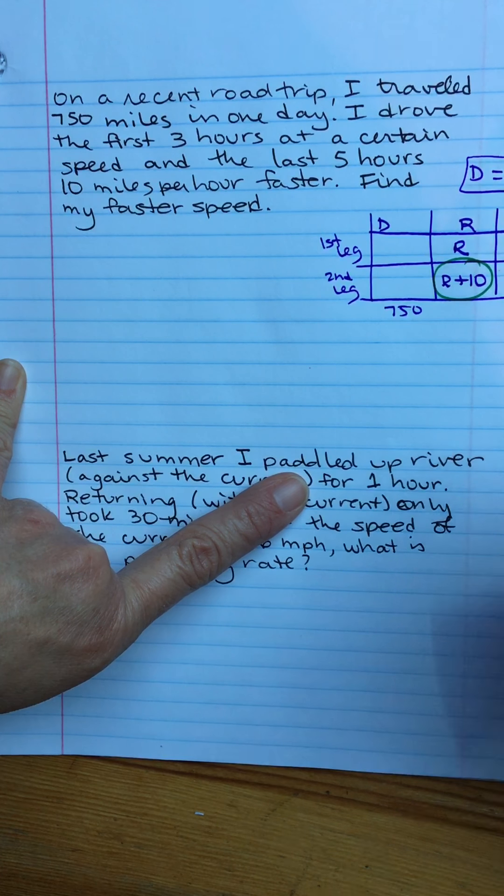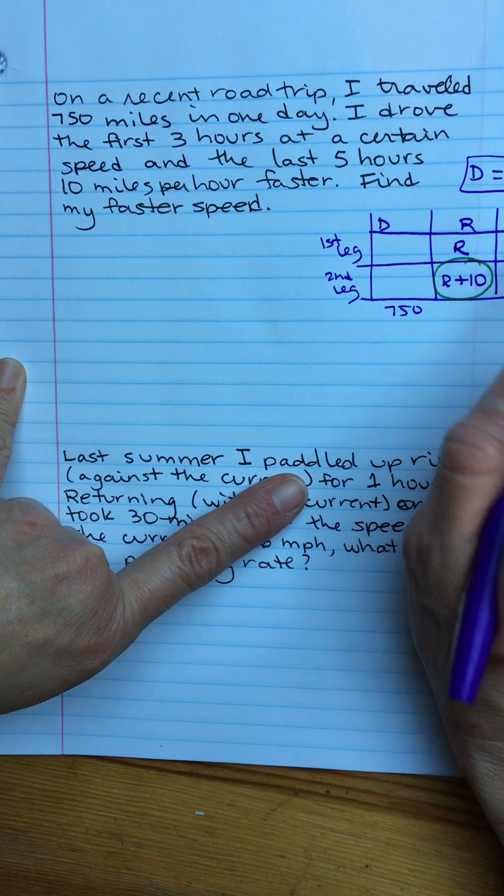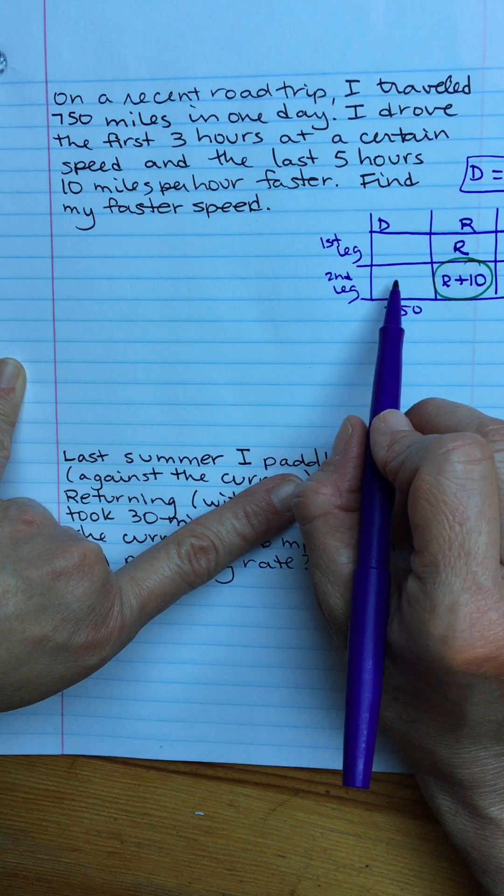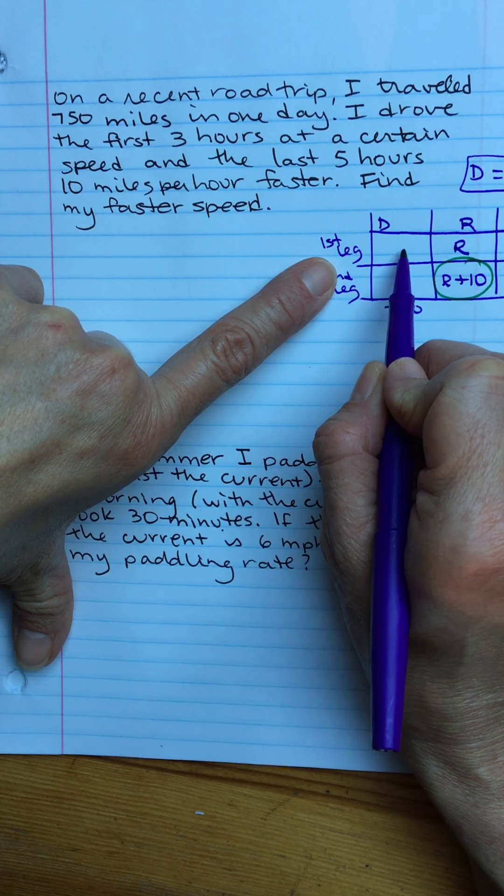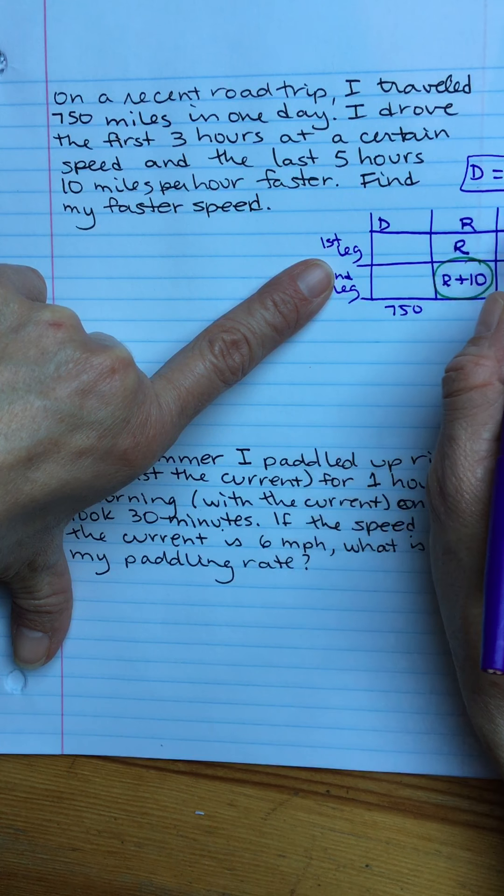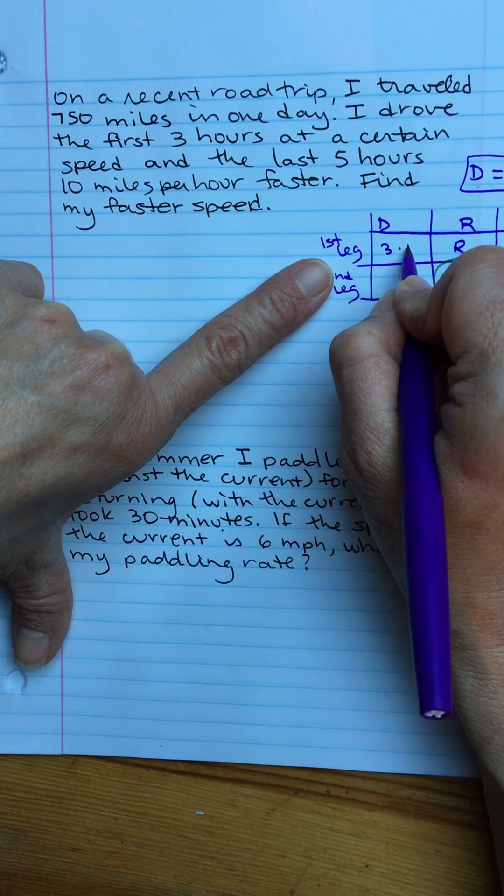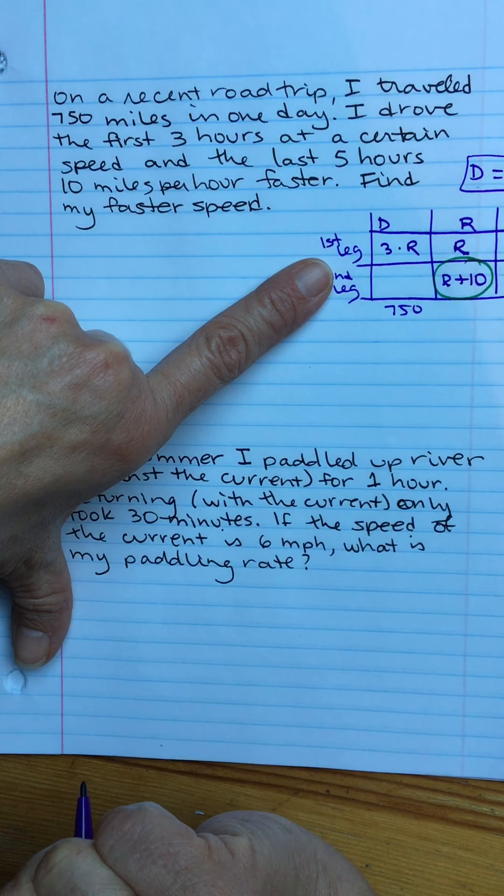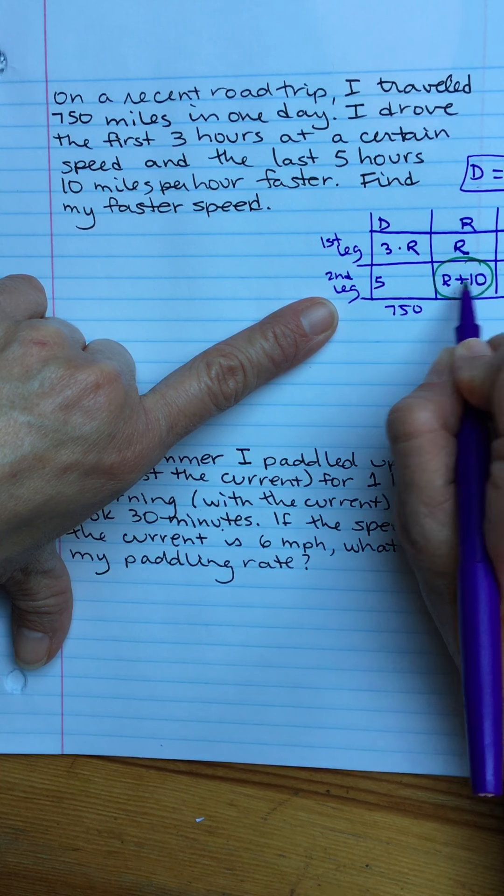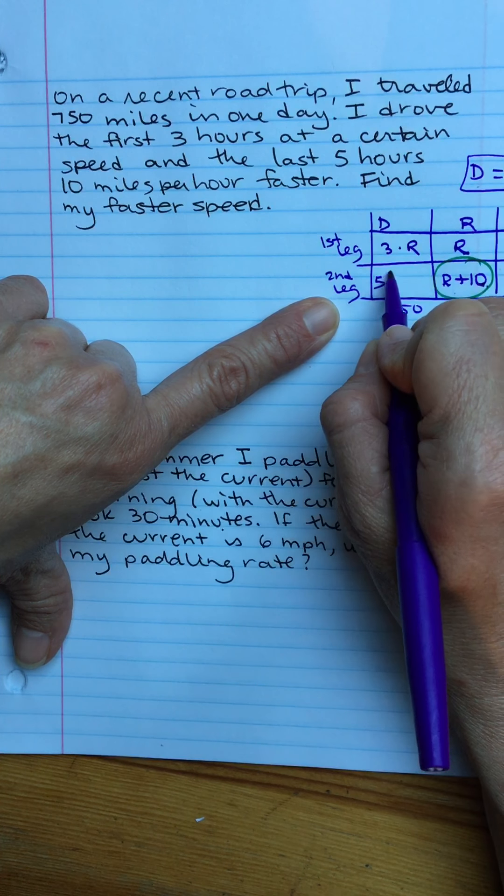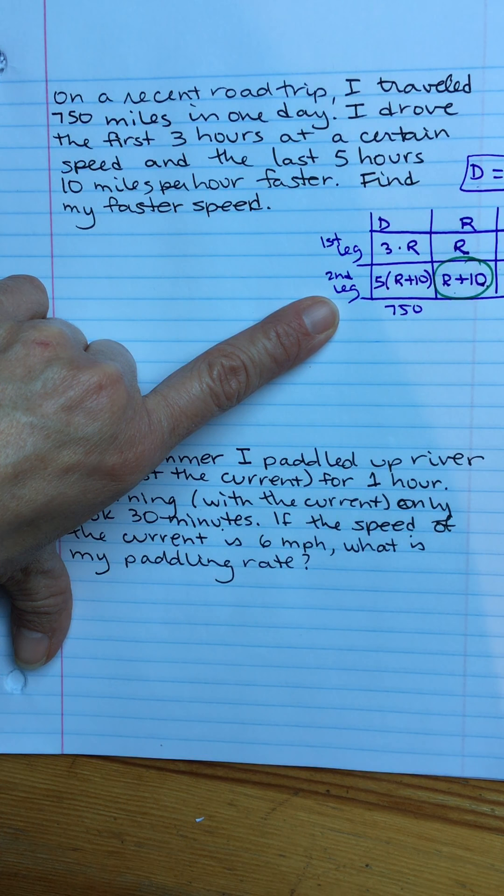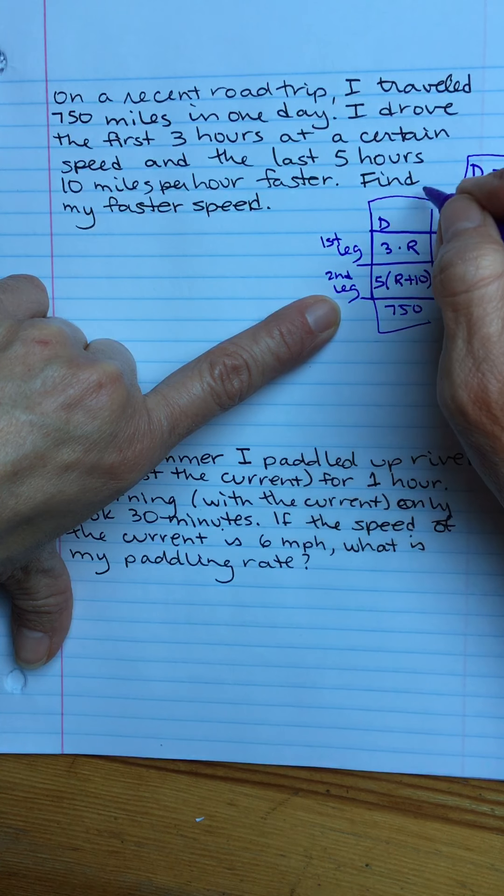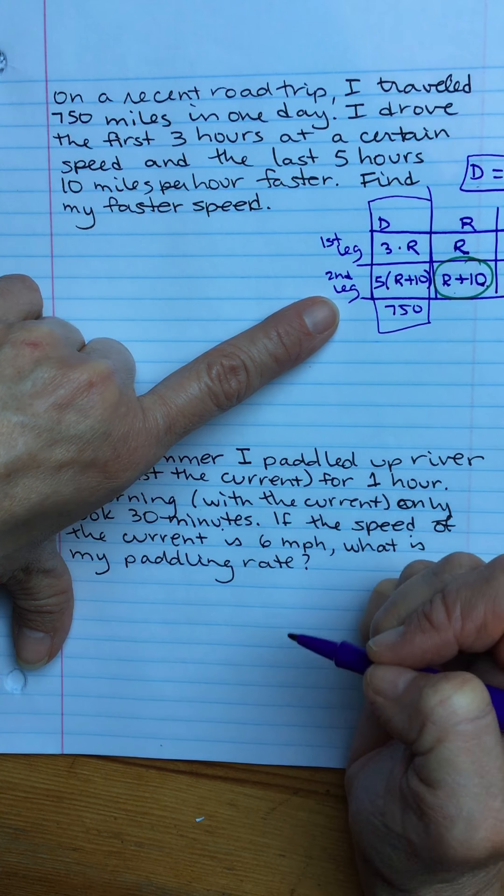Distance equals rate times time. I know my total distance but I don't know each of the individual distances. But I could fill in this first leg distance cell with R times three. So I could have three times R for that first leg distance. And then the second leg distance, five times R plus 10. Now R plus 10 is a binomial, two terms in that expression. So I need to make sure it goes in parentheses so that I distribute the five.